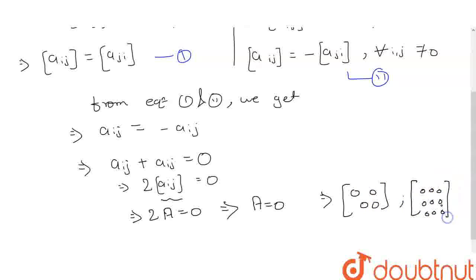So, if all the elements are 0, then we can clearly say that A is a null matrix, which means all the elements are 0. This is what we have to show, okay, thank you.